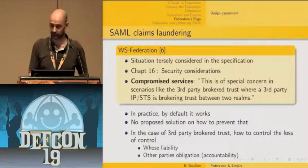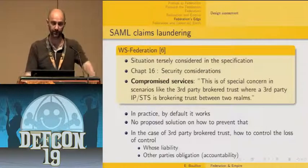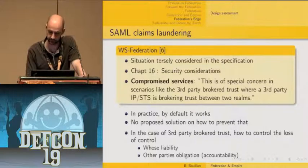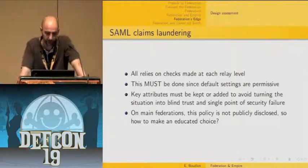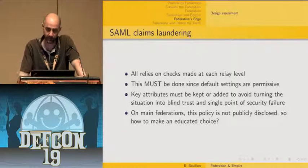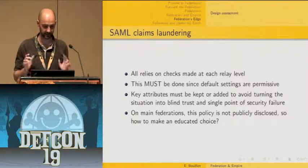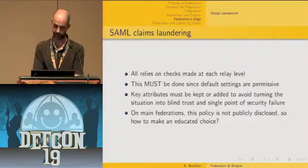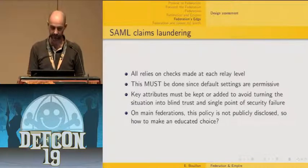In a third-party broker trust case, you need to control the loss of control — whose liability is involved, what are other parties' obligations. I've called this concern 'SAML claims laundering.' Everything relies on the checks made at the STS level, and this must be done since default settings are permissive. A way to do that is to have key attributes added to avoid blind trust in organization D. When you join major federations, you usually don't have access to their policy, so you don't know exactly what checks are in place — and that's an issue.